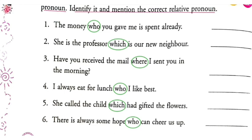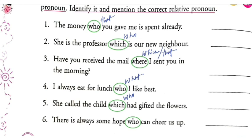First: 'the money who you gave me' — instead of 'who', write 'that you gave me'. Second: 'she is the professor which is our new neighbor' — it should be 'who'. 'Have you received the mail where I sent you in the morning?' — it should be 'which' or 'that'. 'What I like best' — instead of 'who', use 'what'. 'She called the child which had gifted the flower' — it should be 'who'. 'There is always some hope who can cheer us up' — it should be 'that can cheer us up'.